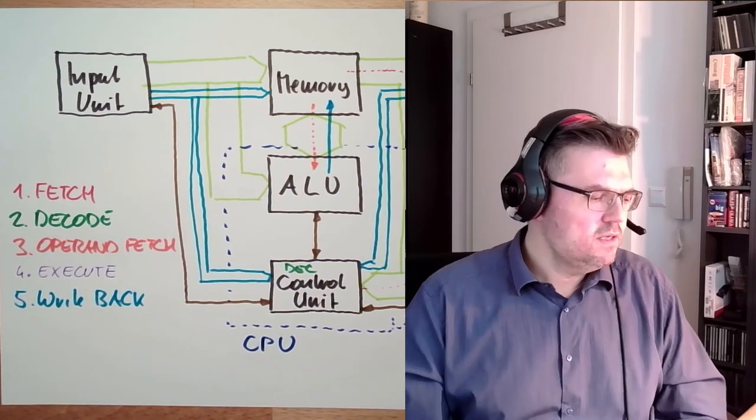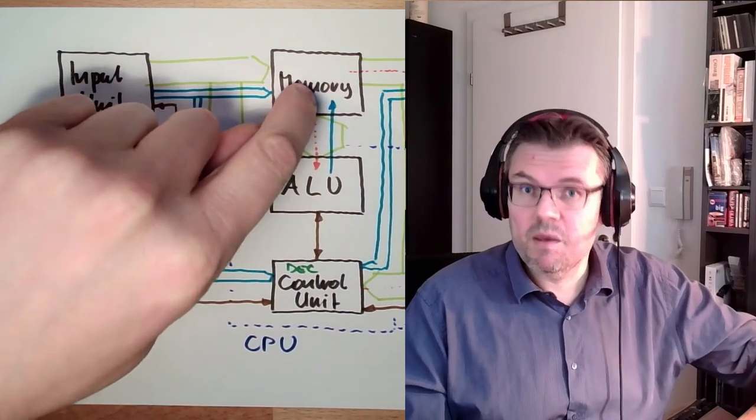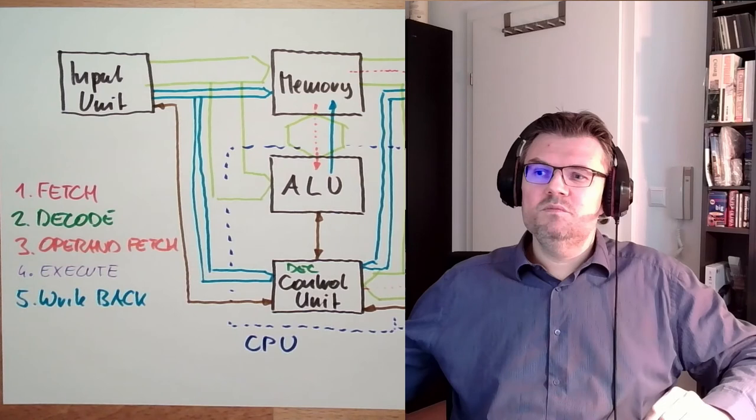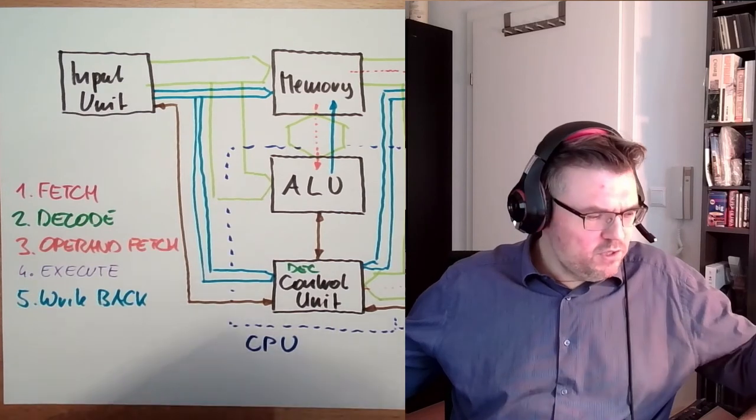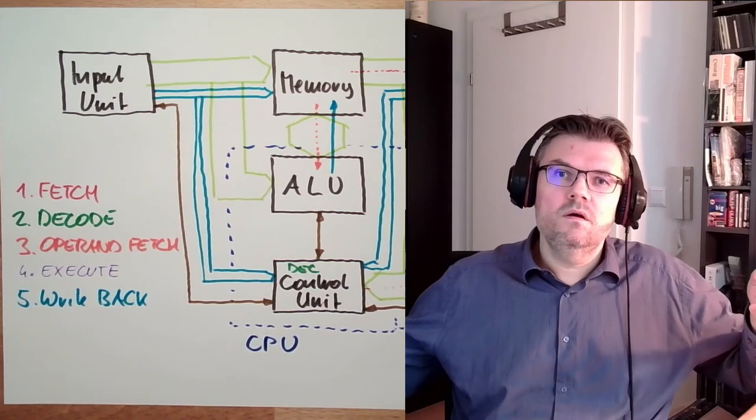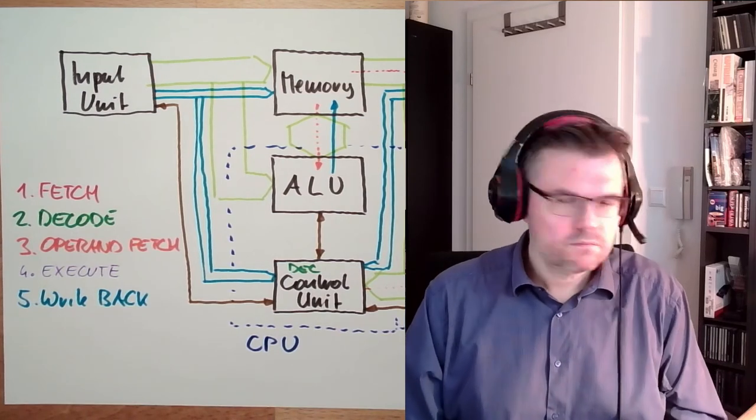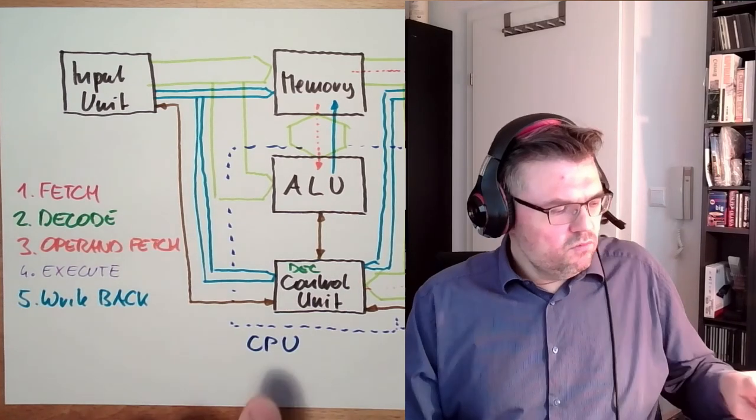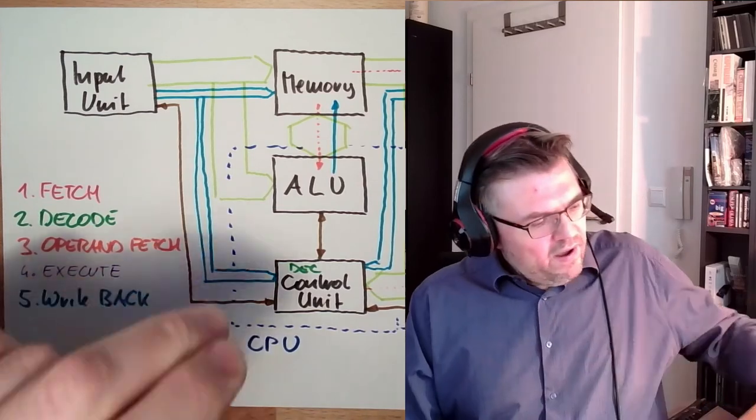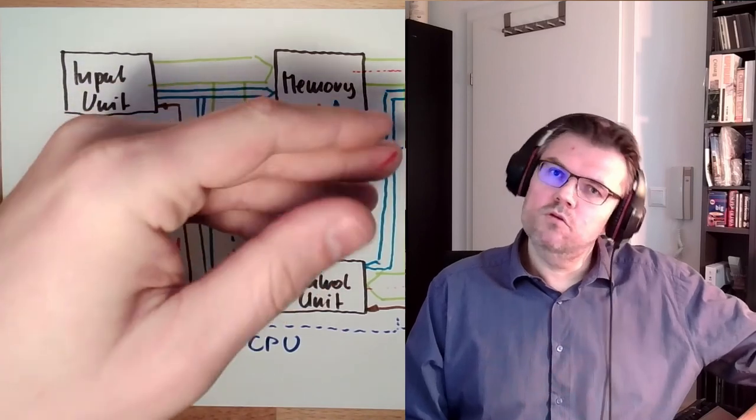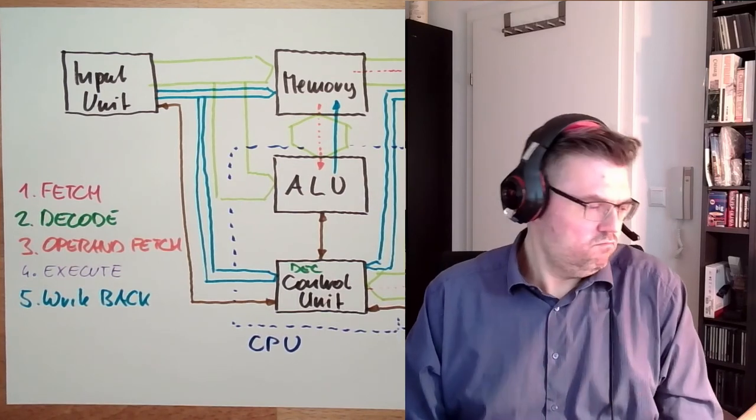What is also beneficial of the von Neumann machine is that the memory can hold instructions and data. Same memory can hold instructions and data. This means with my program, I can change my program. I can simply change my program and this is working. I can alter my program with my program. This is beneficial. I only need to memorize one location. What is the next instruction to do? And if I have less memory for program, I can use more memory for data and vice versa. So this is the working principle.